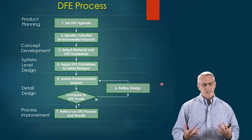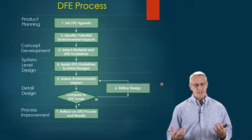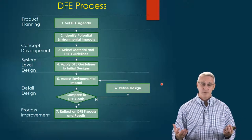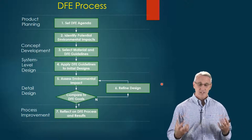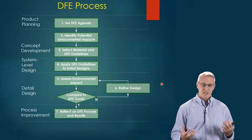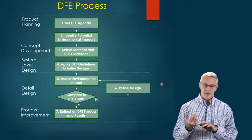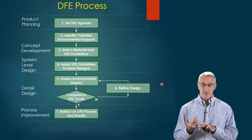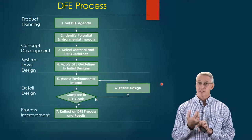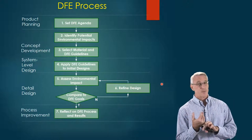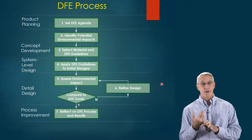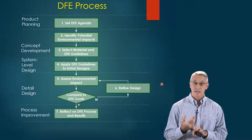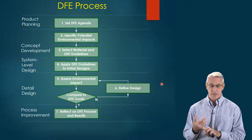If we look at a set of scale: during the planning stage, we're going to set our agenda. At the concept development stage, this is where we identify potential environmental impacts, make a list — probably a priority list — of which ones are the most important for us to minimize, or if we can upcycle anything, make that a priority.